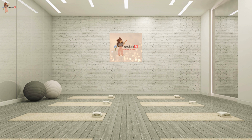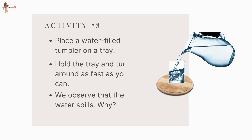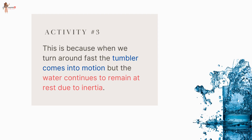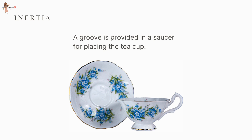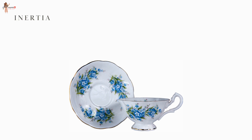Activity 3: Place a water-filled tumbler on a tray. Hold the tray and turn around as fast as you can. You will observe that the tumbler topples down and water spills. This is because when we turn around fast, the tumbler comes into motion but the water continues to remain at rest due to inertia. Also observe that a groove is provided in a saucer for placing the teacup — it prevents the cup from toppling over in case of sudden jerks.